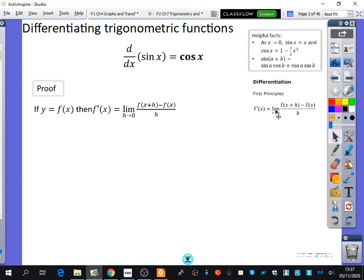Some helpful facts: when x is a small number, sine x is approximately equal to x and cos x is approximately equal to one minus a half x squared. Where do those come from? The small angle approximations. This is where they're now coming into play.